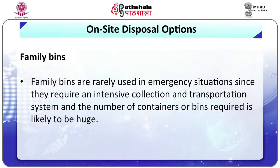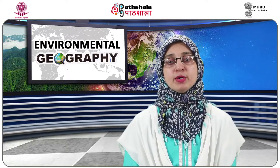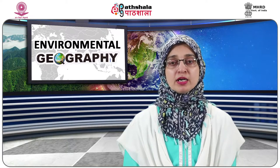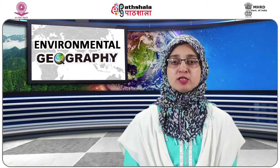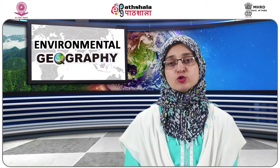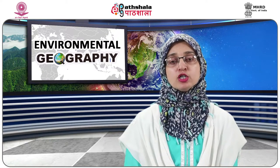Number four: family bins. Family bins are rarely used in emergency situations since they require an intensive collection and transportation system and the number of containers or bins required is likely to be huge. Number five: communal disposal without bins. For some public institutions such as markets or distribution centers, solid waste management systems without bins can be implemented, whereby users dispose of waste directly onto the ground.